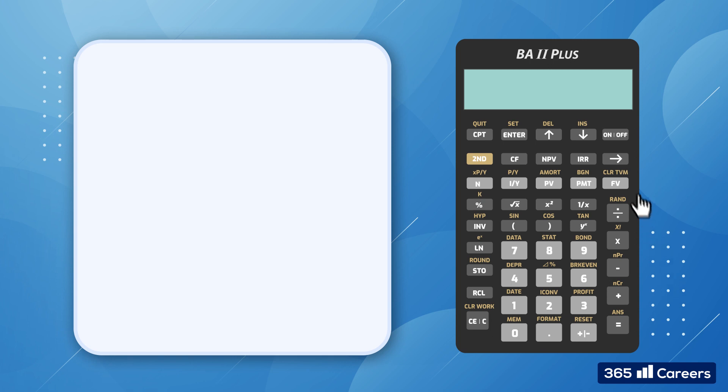If we want to select a second function, we need to press 2nd and a corresponding key. Now we should be able to see an indicator which will appear on the upper left corner of the calculator display. Our first task is to set the number of decimal places. Currently, the calculator shows 0.00. In other words, it displays two decimal places. That is, two symbols after the decimal point.